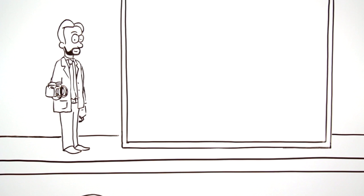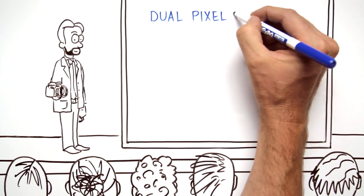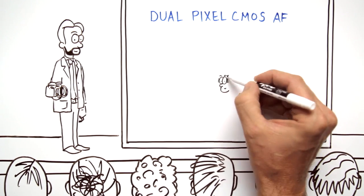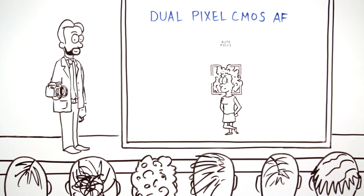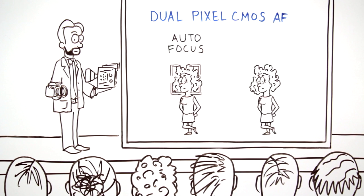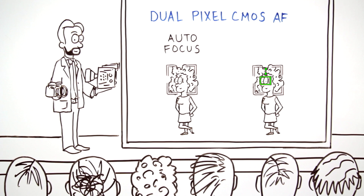Well, Canon is now changing all that with dual pixel CMOS autofocus, a cutting-edge, one-of-a-kind solution that gives filmmakers truly stunning autofocus capabilities, as well as a powerful manual alternative, focus guide.